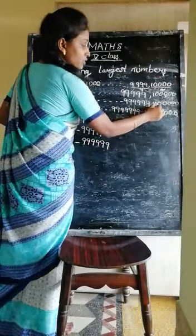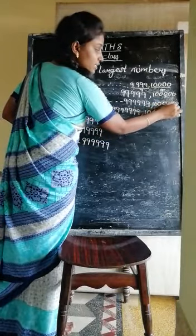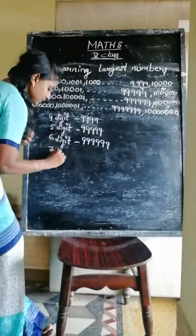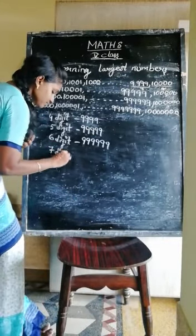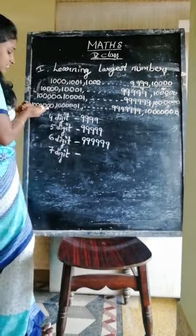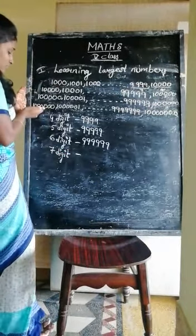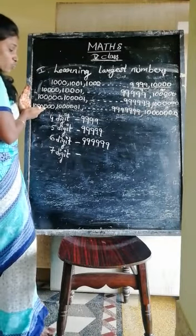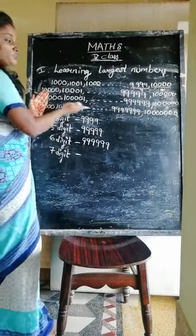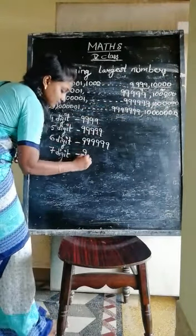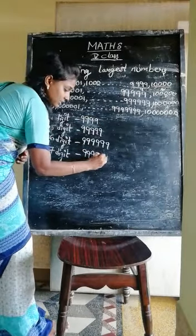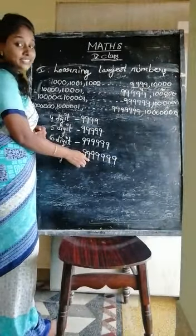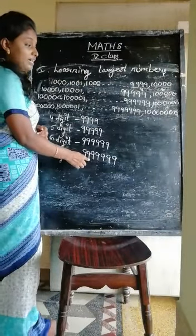And here we are going to the 7-digit number — 1, 2, 3, 4, 5, 6, 7 digits. This is not a countable number for 6 digits. In the 7-digit number, 10,00,000 is the smallest number, and so on up to 9,99,99,999, which is the 7-digit largest number.